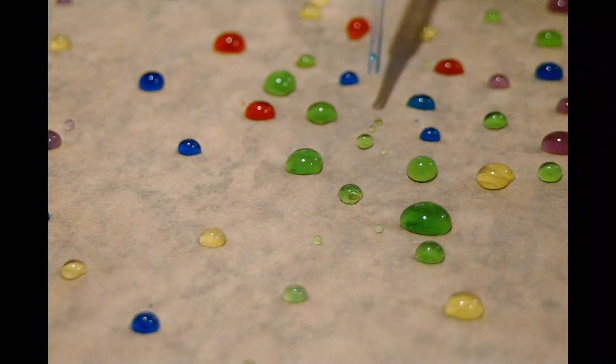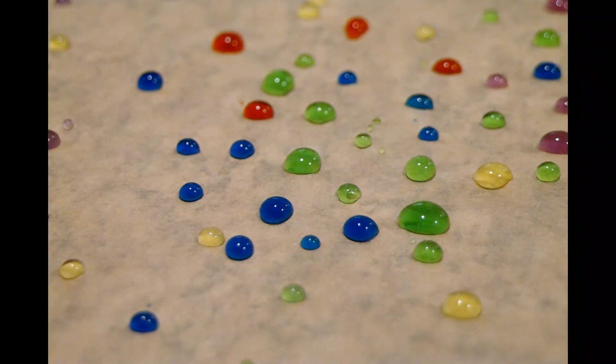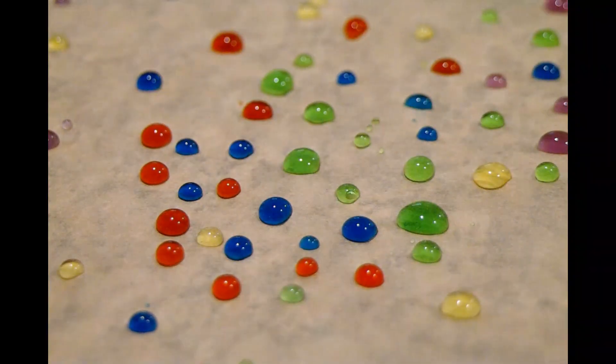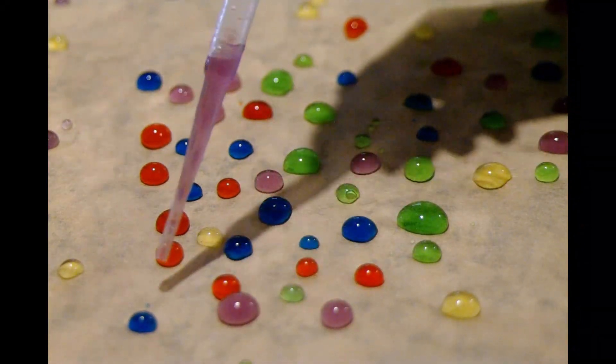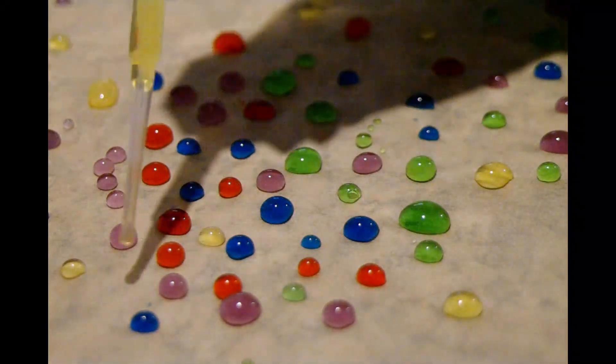Instead, they pull tighter together with the ones beside them and below them, creating an inward pull that holds the water together like in these droplets. This means that some bugs can use water just like a trampoline.